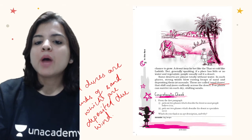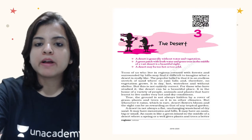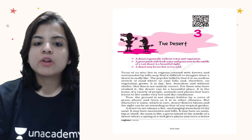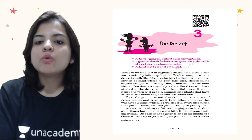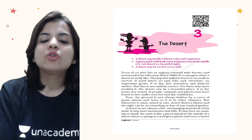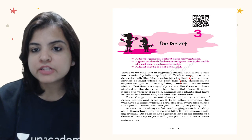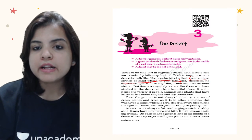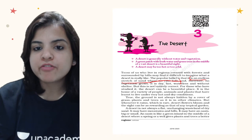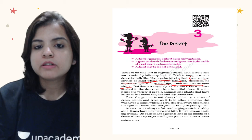From the first paragraph, pick out two phrases which describe the desert as most people believe it is. The first phrase is: 'an endless stretch of land where no rain falls, and therefore no vegetation grows.' The second phrase is: 'it is dry, hot, waterless and without shelter.' Those are your two answers.